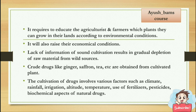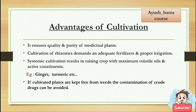Lack of information on sound cultivation results in gradual depletion of raw material from wild sources. Root drugs like ginger, saffron, tea, etc. are obtained from cultivated plants. Cultivation of drugs involves various factors such as climate, rainfall, irrigation, altitude, and temperature.